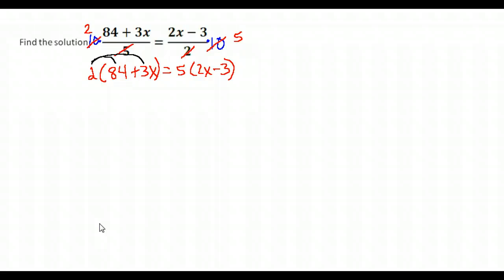5 goes into 10 twice, and 2 goes into 10 five times on this side. So I am left with 2 times 84 plus 3x on the left-hand side equals 5 times 2x minus 3 on the right-hand side. Do not forget your parentheses there so that when you multiply, you multiply by both terms. So I have 2 times 84 is 168, plus 2 times 3x gives me 6x. On the other side, 5 times 2x is 10x, and 5 times negative 3 is negative 15.